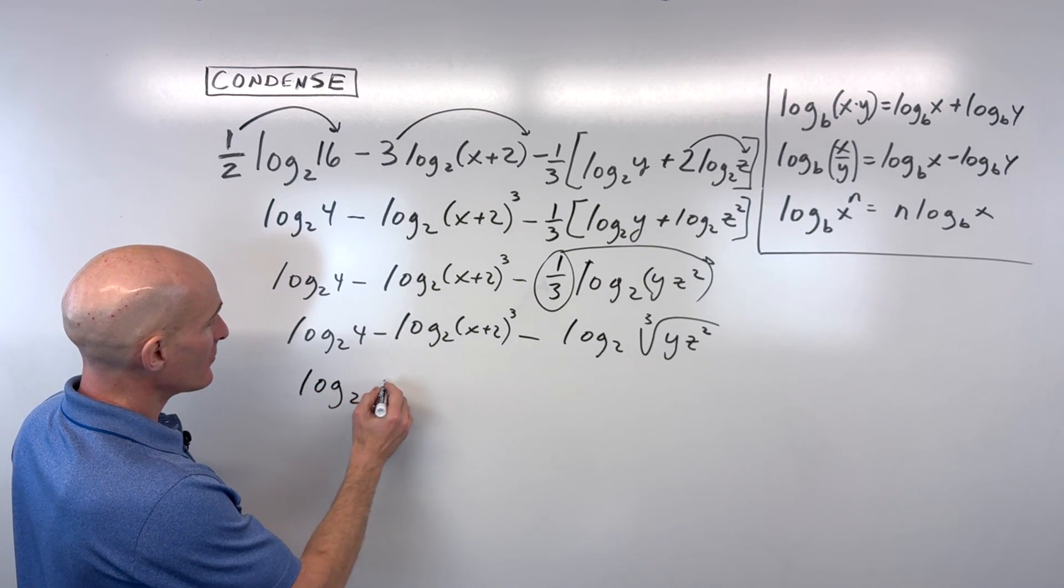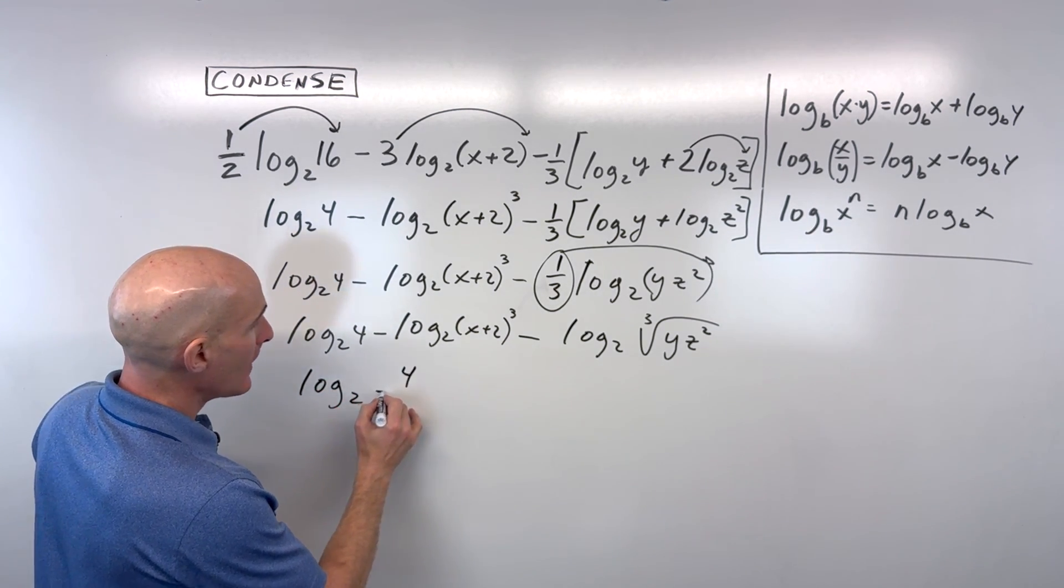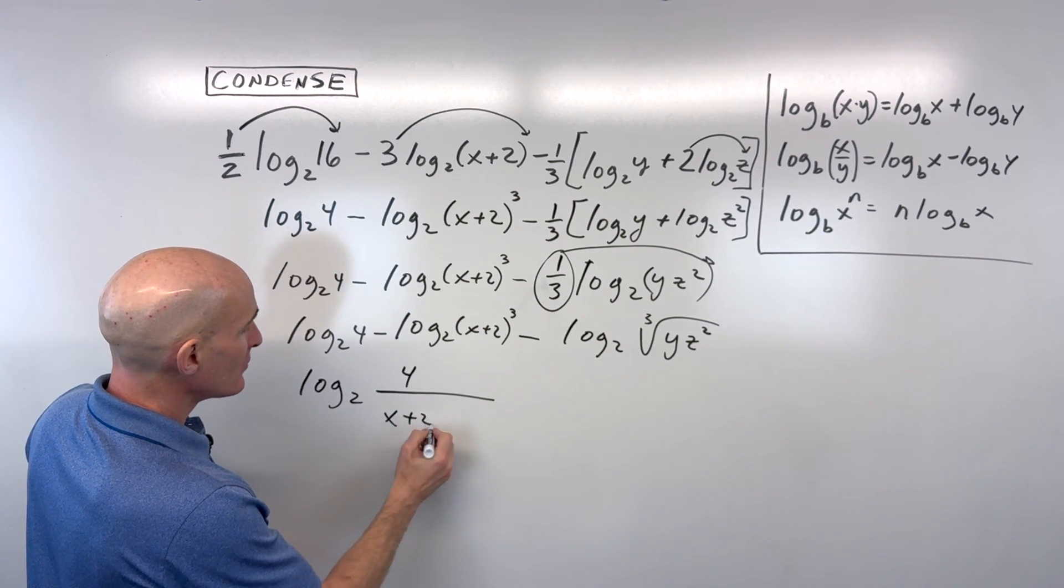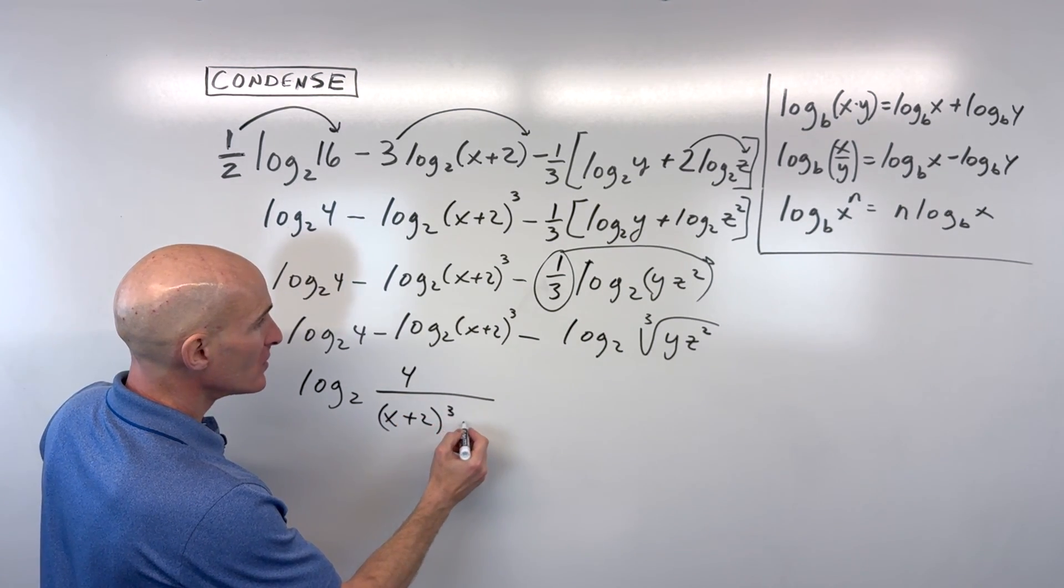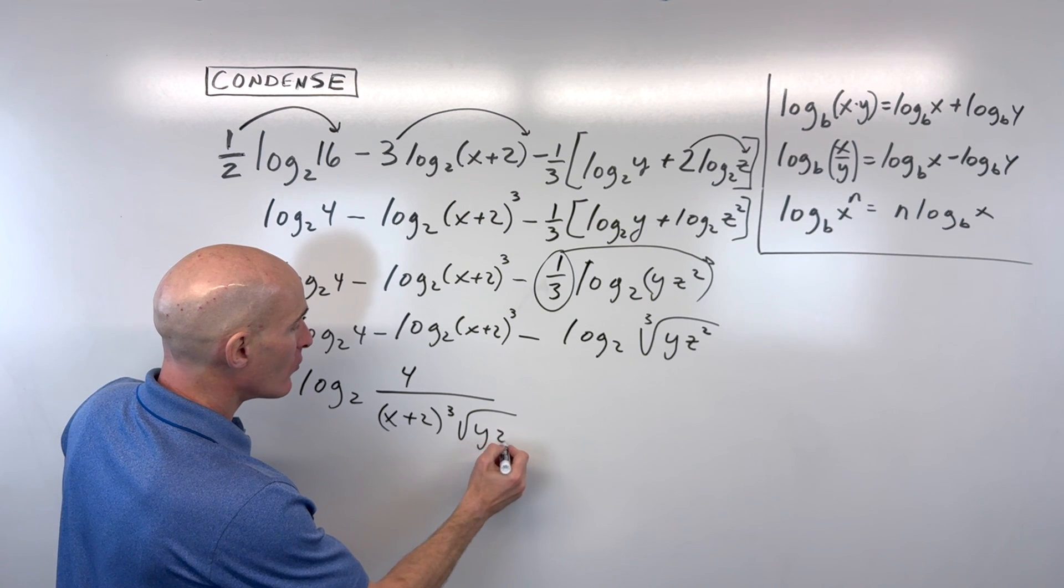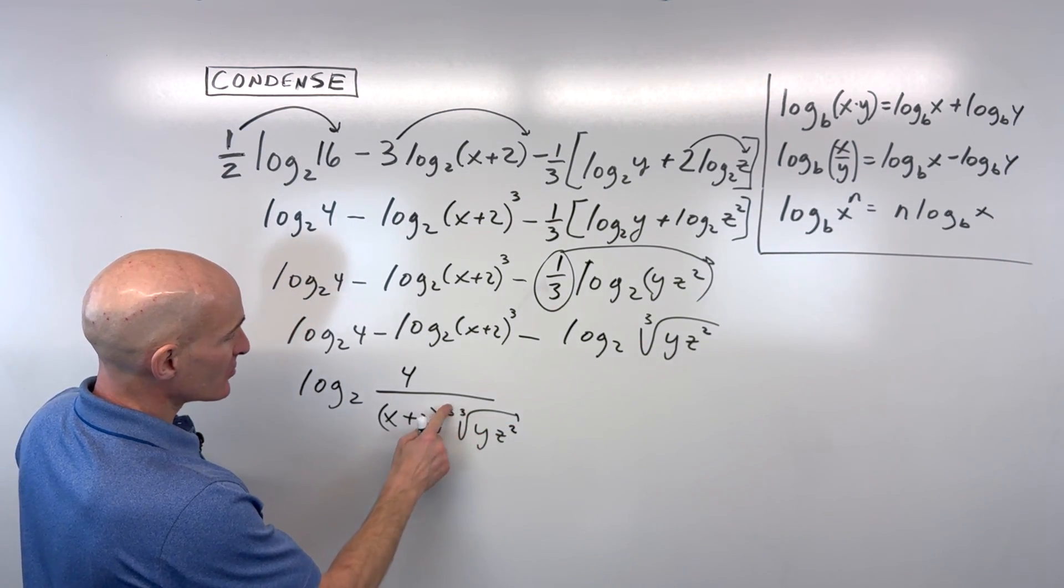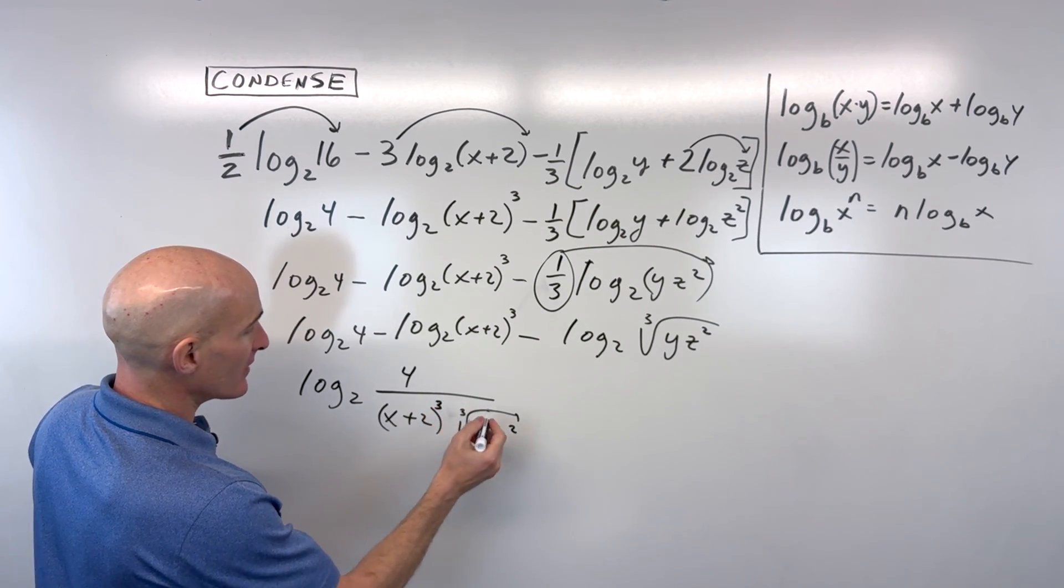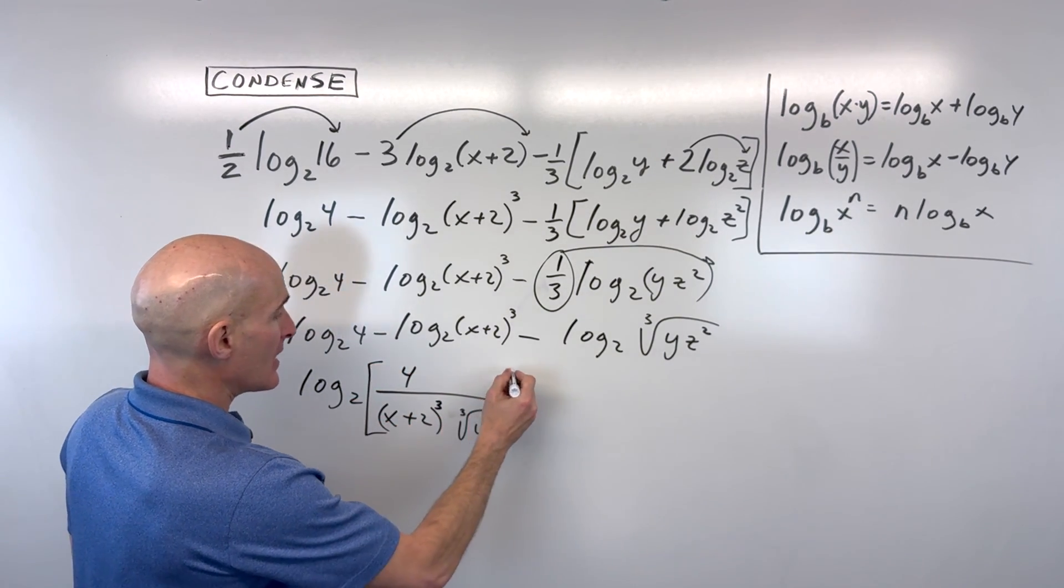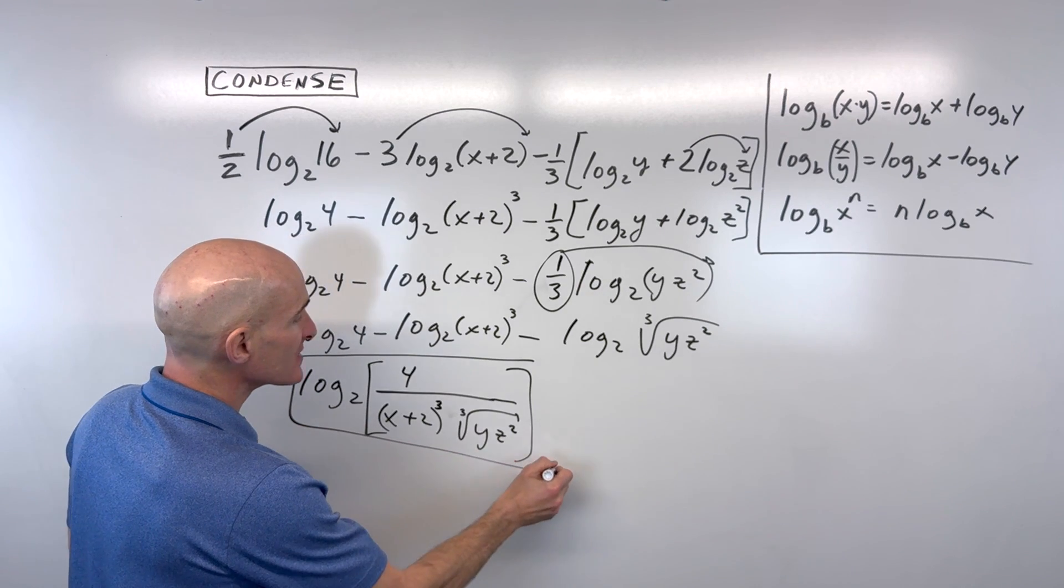this should condense down to log base 2 of 4 over x plus 2 cubed times the cube root of y z squared. Actually, did I say square root? Cube root of y z squared. This 3 here, let me move it over a little bit. And you can see we've condensed this all into one single log.